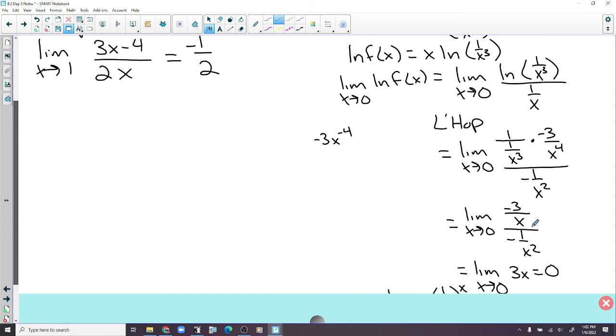Then x to the 4th over x to the 3rd, that's just x. So we get negative 3 over x. And then we're going to multiply by the reciprocal, which is multiplied by x squared over 1. So one of those x's cancel out, you're just left with 3x. So 3x equals 0.